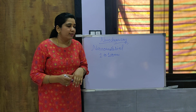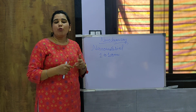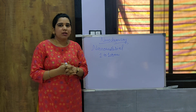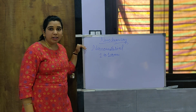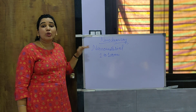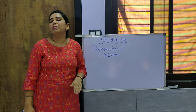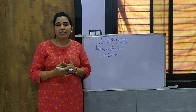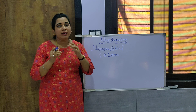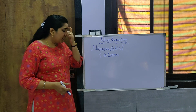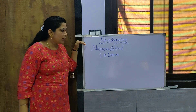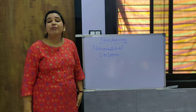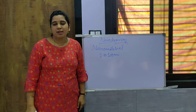Nano materials are mainly of three types: one-dimensional nano material, two-dimensional nano material, and three-dimensional nano material. All these types are used on a very large scale and are studied based on their different properties.